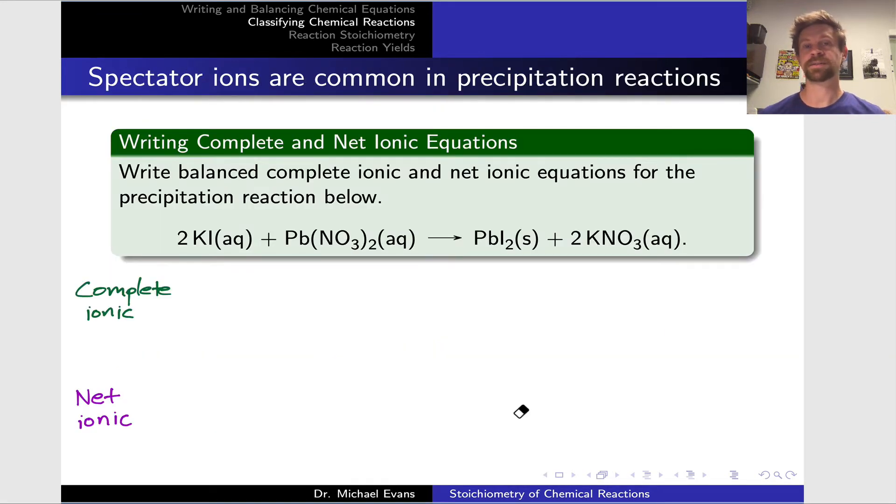It's very common for us to see spectator ions in precipitation reactions. This is because when two ions get together, a cation and an anion, to form an insoluble solid, there are counter ions coming along with the really reactive cation and anion that stay in aqueous solution the entire time. In this practice problem, we're tasked with writing balanced complete ionic and net ionic equations for the precipitation reaction below, whose molecular equation is given.